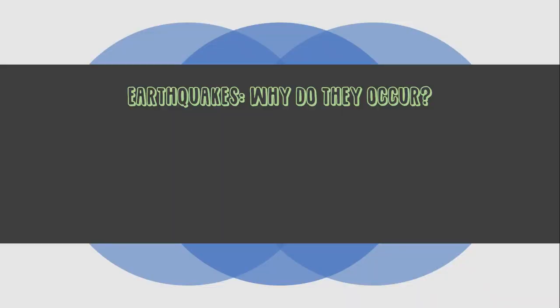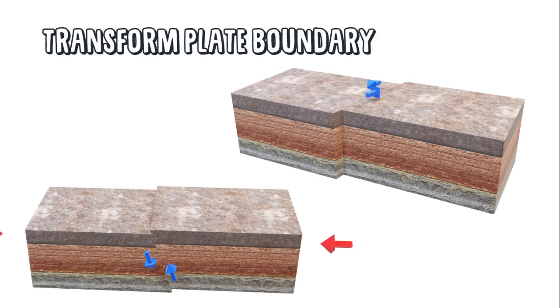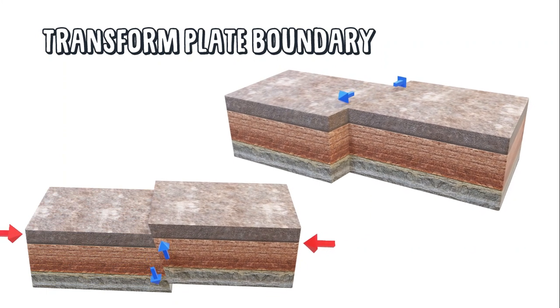Earthquakes happen along plate boundaries in the same areas as volcanoes. Like volcanoes, earthquakes happen along the margins of tectonic plates. The earth's plates move unevenly — they move slowly and grind against each other, creating a shock wave that vibrates through the earth's crust, causing the ground to shake. The earth's crust is weakest at the places where tectonic plates meet.